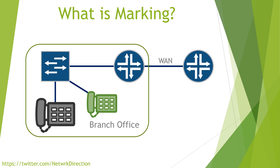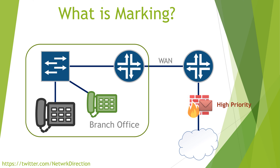We might also want to remark traffic if it comes from a source that we don't trust, like the internet. If we don't trust the source, then we shouldn't trust the markings either. We could remark this traffic or strip the markings out entirely. Now that you know that traffic can be remarked, you might be wondering: can my WAN provider remark my traffic? Along the WAN link, your provider probably has a few network devices that are completely out of your control, so nothing short of encrypting your traffic will prevent them from being able to change your packet markings. So this is something that you will need to discuss with them.